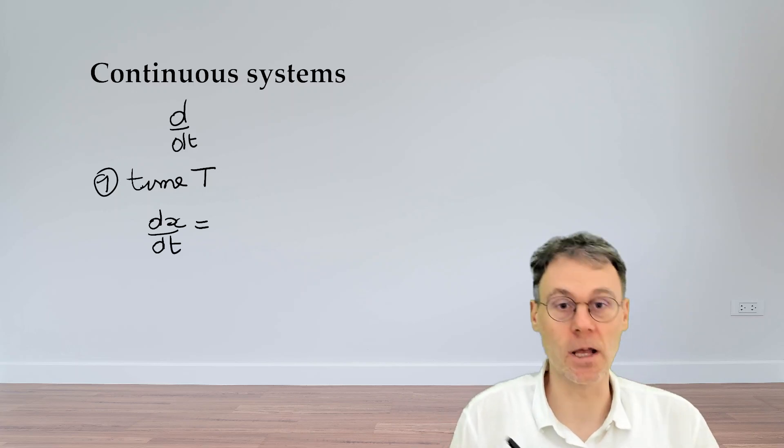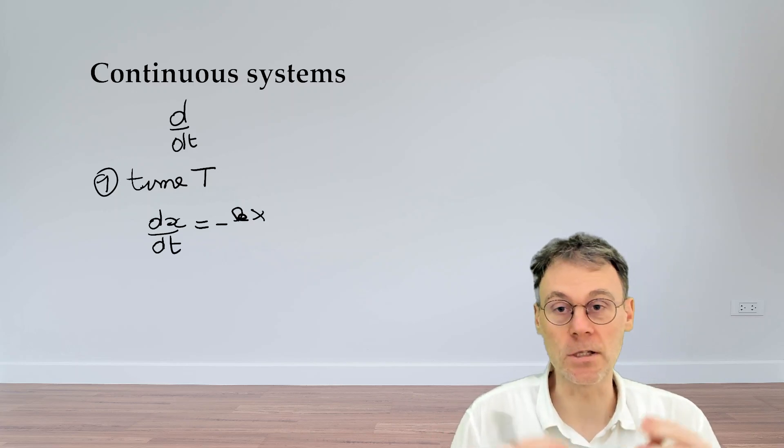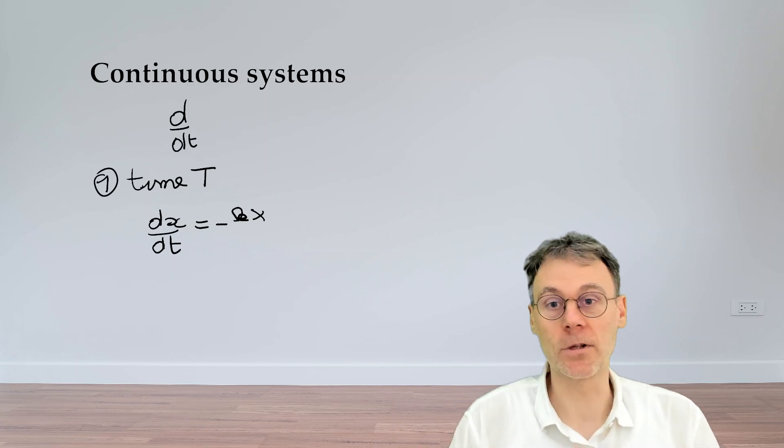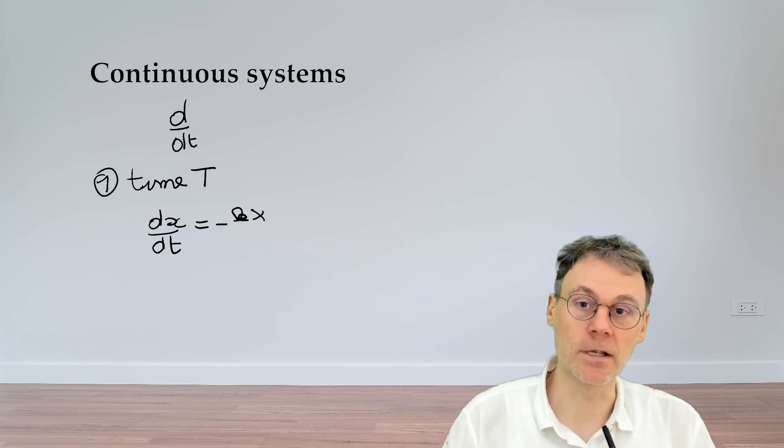The equation is given by dx by dt is minus kx. So this is, for example, the equation if x represents a temperature that describes the cooling of an object with a certain specific heat k. So pause the video, see if you can solve this particular dynamical system and if you can calculate a discrete time t map based on this particular continuous differential equation.